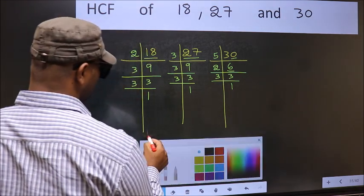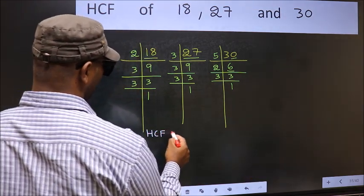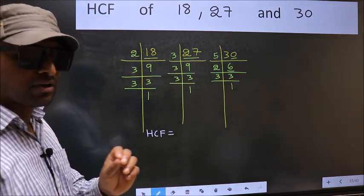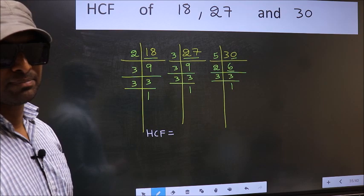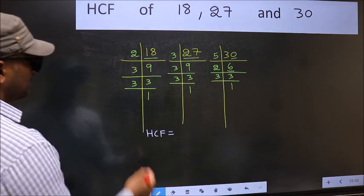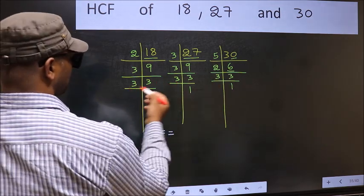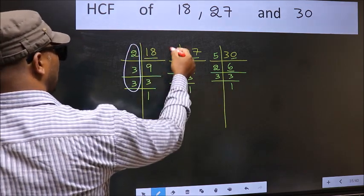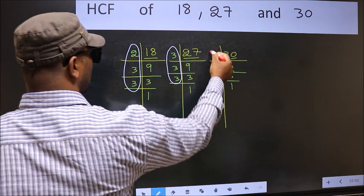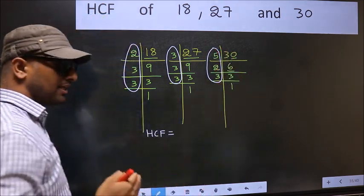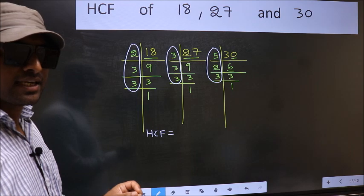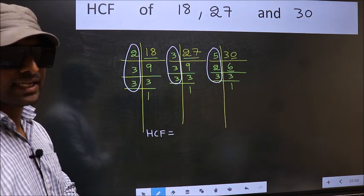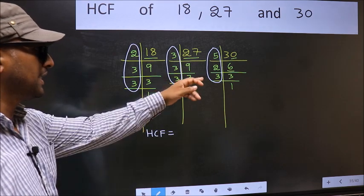Therefore, our HCF is the product of numbers which should be present in these 3 places. That is here and here and also here. I repeat, HCF is the product of numbers which should be present in these 3 places.